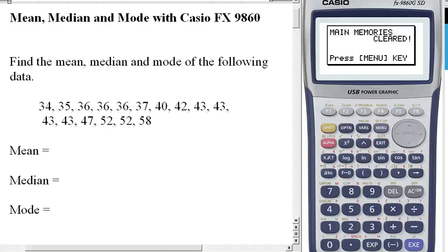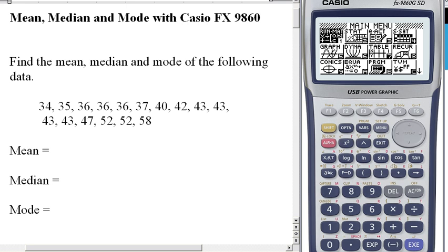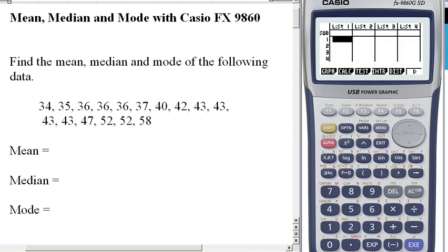Okay, we're going to learn how to find the mean, median, and mode using our Casio calculators, and we're going to use this data here that I've prepared. First thing, hit the menu button and find statistics. There we go. It comes up with a list. We have to input all this data into that list.